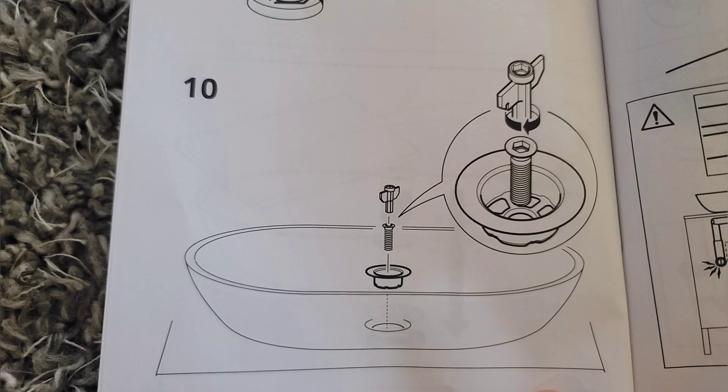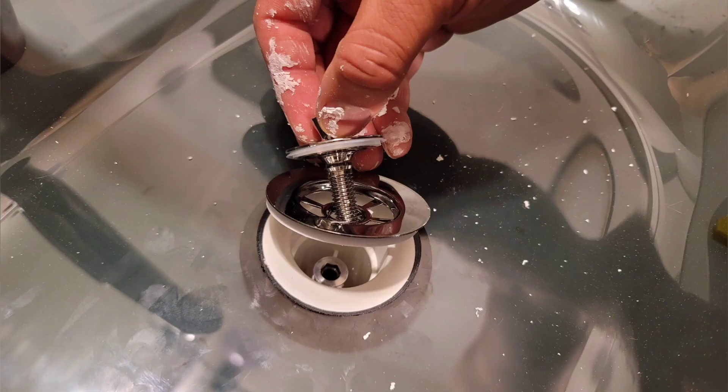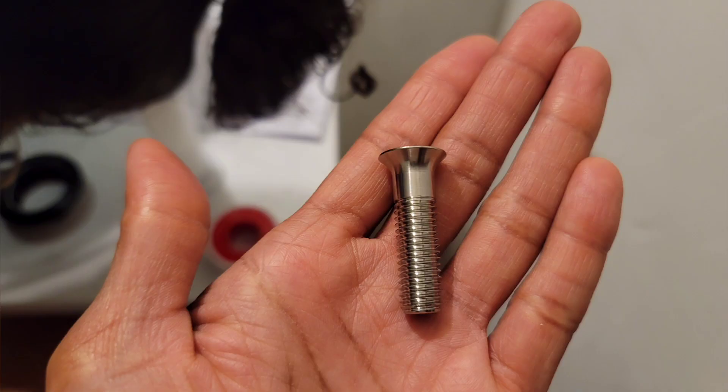Step ten is just inserting the drain stopper. And, using that yellow screw to help screw in the stopper and the plate. And, it locks it in. And, there are some other pieces in here. I was a little confused at first.